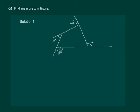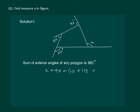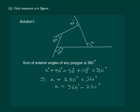Let us read the question: Find the measure of X in the figure. We know that the sum of exterior angles of any polygon is 360 degrees. So X plus 90 plus 50 plus 110 should equal 360. This means X plus 250 degrees equals 360 degrees. Therefore X equals 360 minus 250, which gives X equal to 110 degrees.